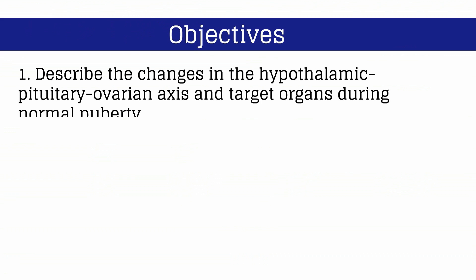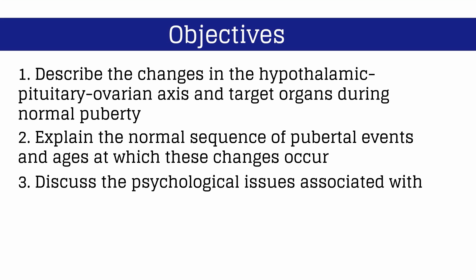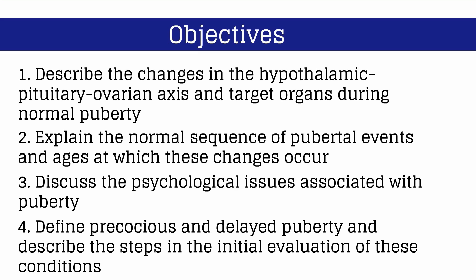The objectives of this video are to describe the changes in the hypothalamic pituitary ovarian axis and target organs during normal puberty, explain the normal sequence of pubertal events and ages at which these changes occur, discuss the psychological issues associated with puberty, and finally define precocious and delayed puberty and describe the steps of the initial evaluation of these conditions.